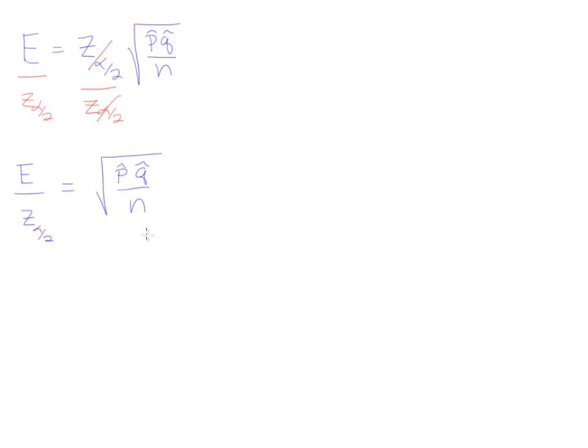Our next step is to square both sides so we can remove this square root. A square here on the left-hand side, a square here on the right-hand side. We'll have E squared over Z squared alpha divided by 2 equals just P hat Q hat over N.